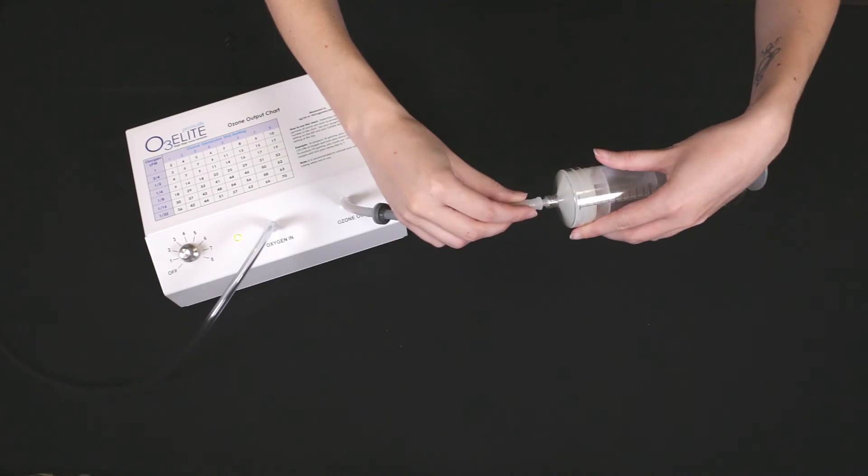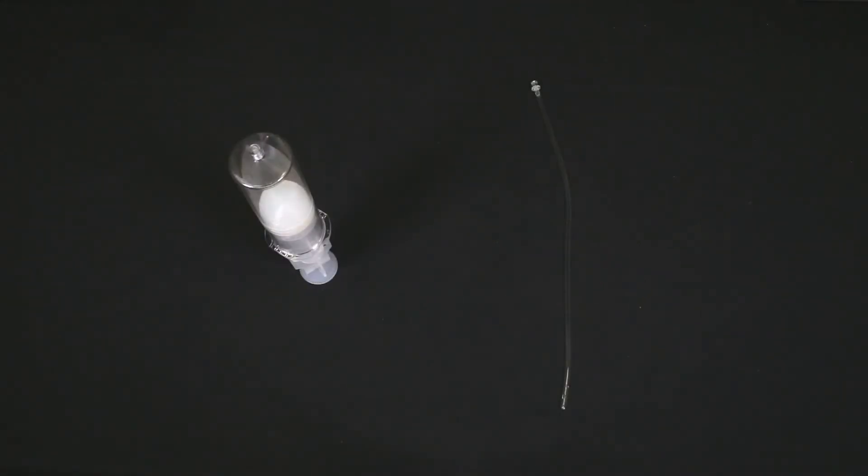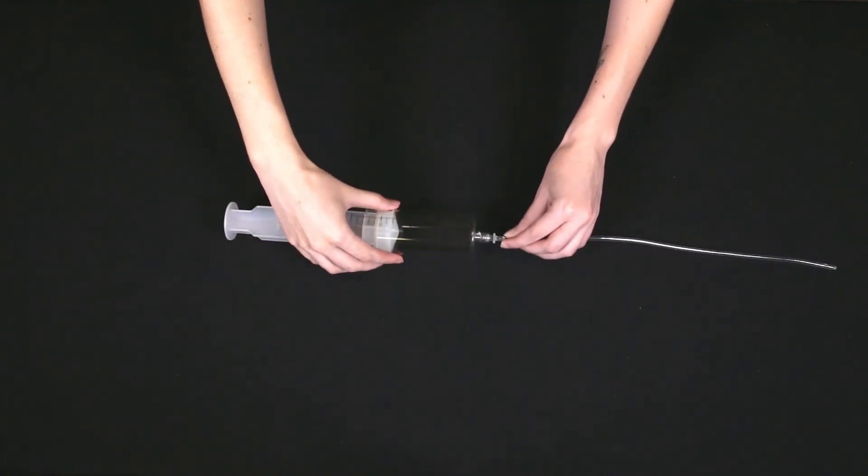You can then connect the syringe to the end of the tubing. When the syringe is full, unscrew it from the tubing, turn off the ozone and oxygen, and tip the syringe upright to prevent ozone from escaping.